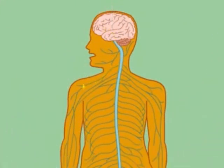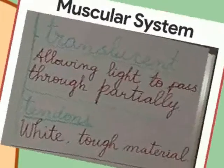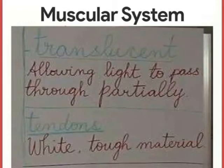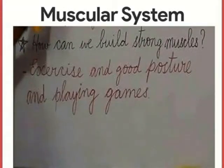This is the science lesson on the human body, part 3: the muscular system. Muscles exercise good posture and allow flowing movement.